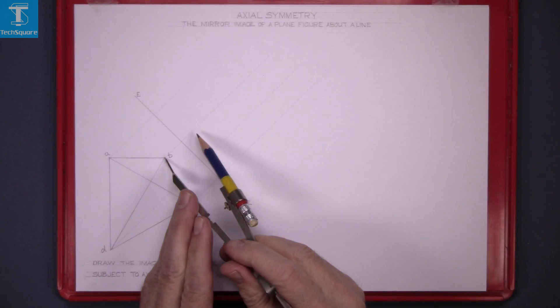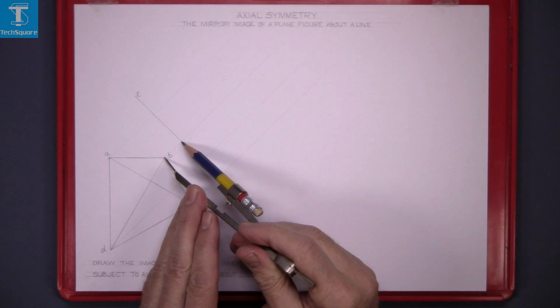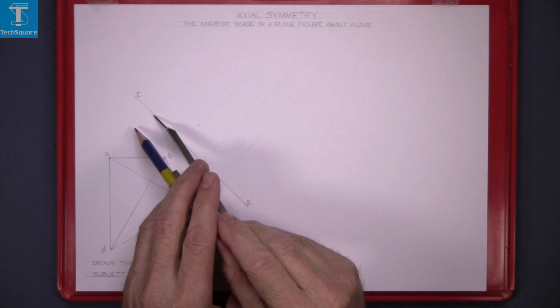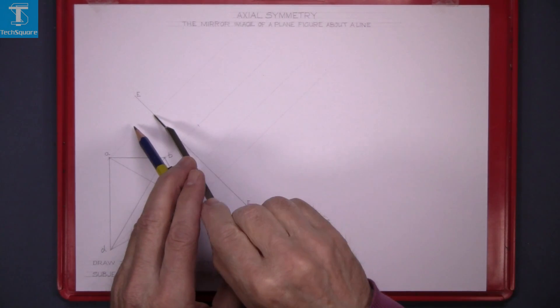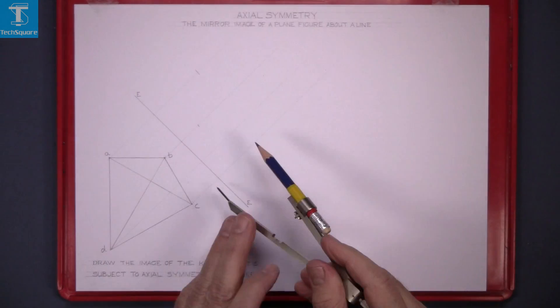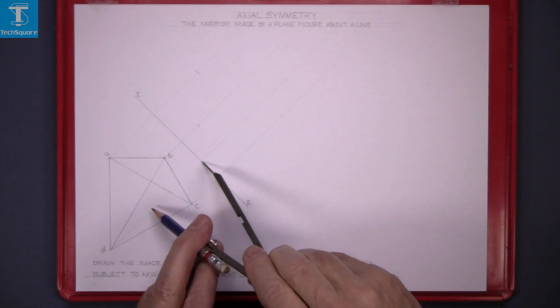Set the compass from the line to the first point and mark it on the opposite side. And do the same for each point. From the line to the point and then mark it on the other side.